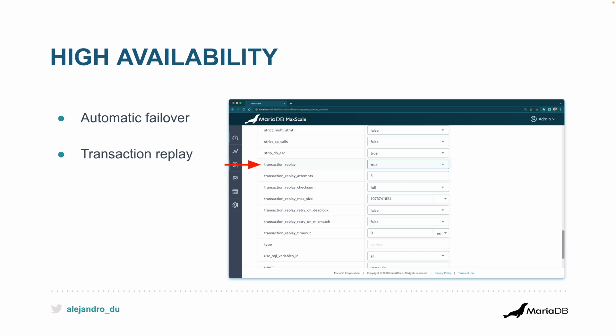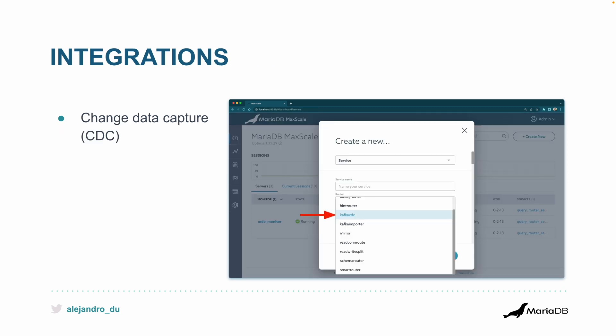At some point MaxScale is able to reconfigure everything and run the transaction somewhere else so it doesn't fail. The application doesn't need to handle this — you can remove that retry code if you have it, or just not waste time coding that part. This is very useful for developers.